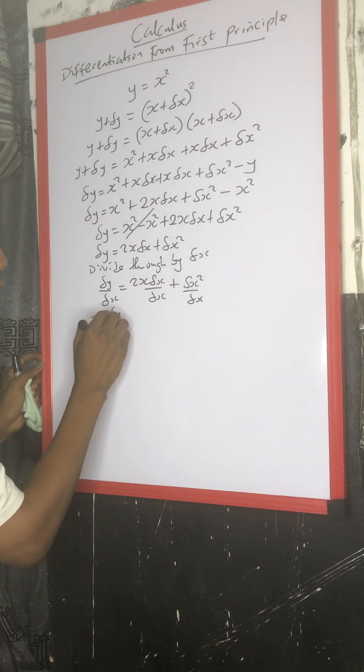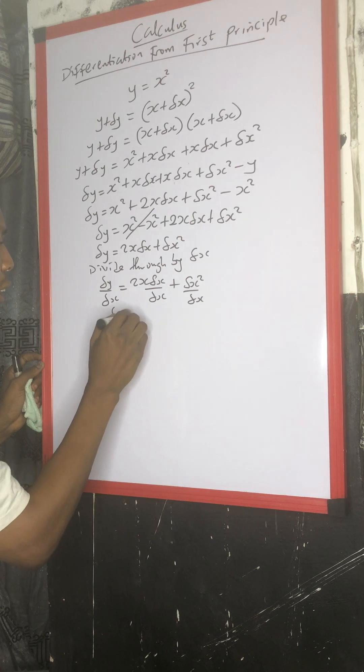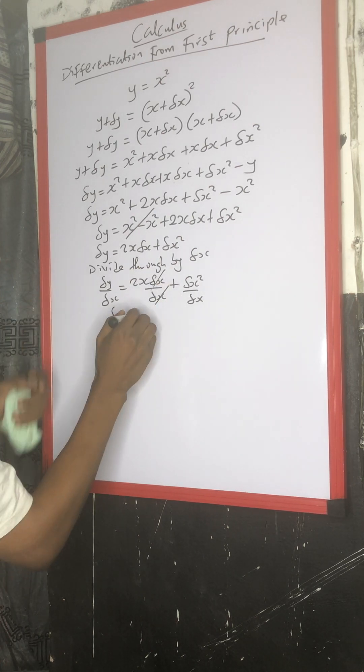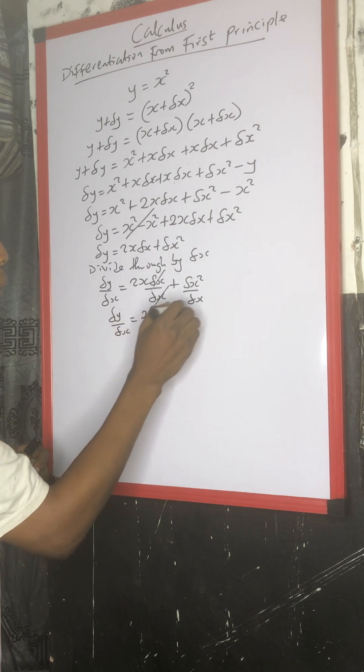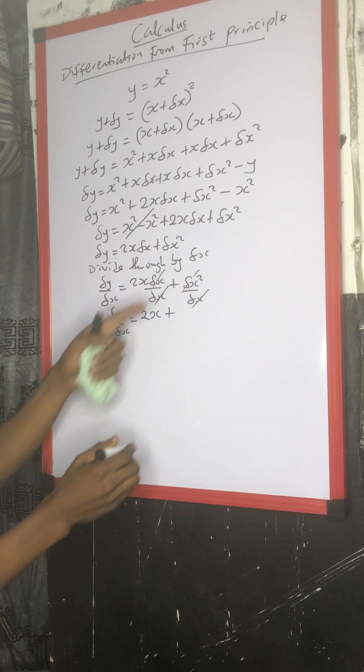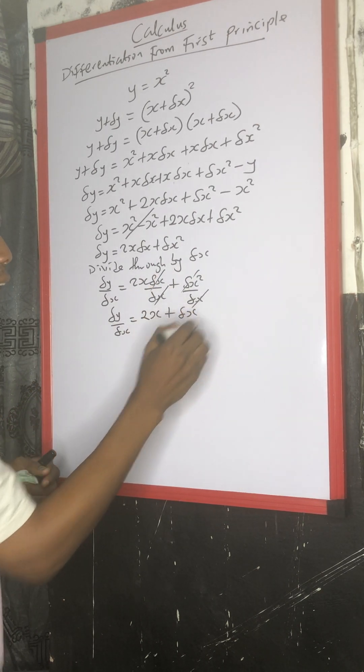Then we have change in y over change in x equals to, this can cancel out this. You will be left with 2s, then plus this cancels out this. You will be left with change in x.